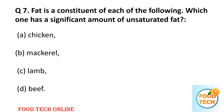Question 7: Fat is a constituent of each of the following — which one has a significantly higher amount of unsaturated fat? A: chicken, B: mackerel, C: lamb, D: beef. Answer: B, mackerel.